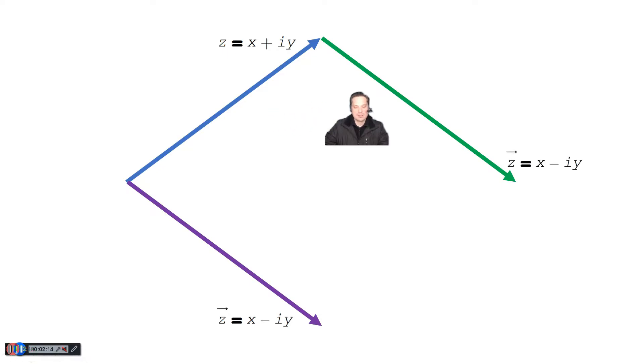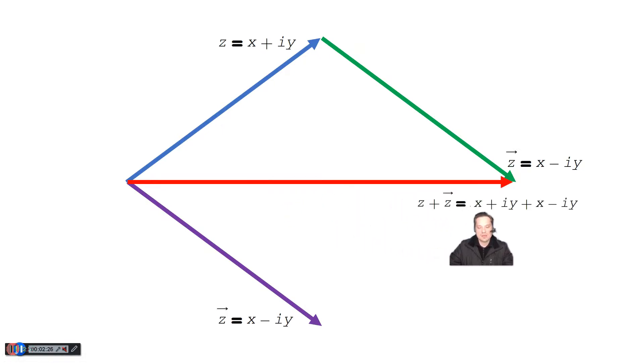And then when you add them, it's going to look like the following. It's this red arrow. So this is essentially the same concept as in vector addition. So this red arrow represents z plus z bar. In other words, it's z plus z bar equals x plus yi plus x minus yi.